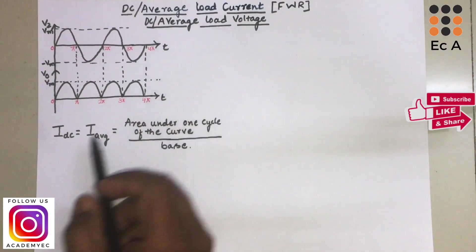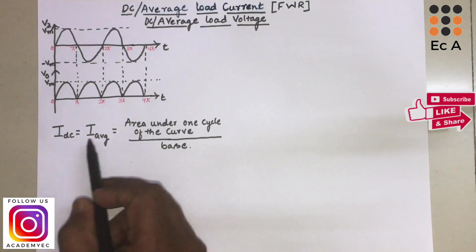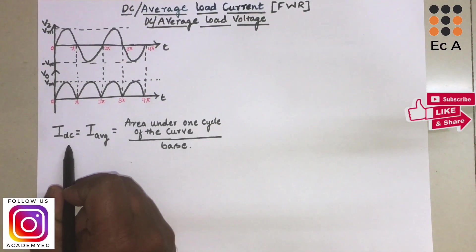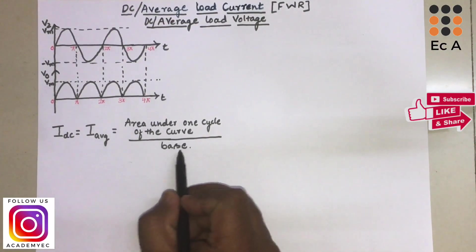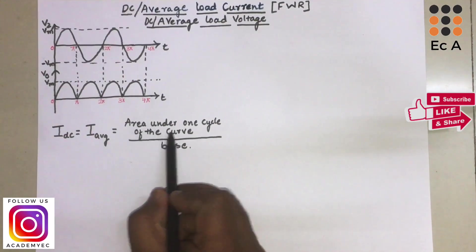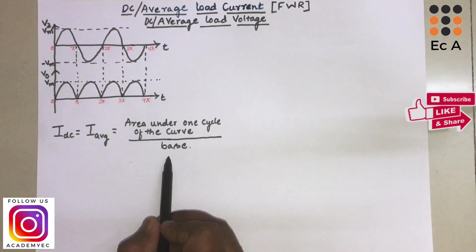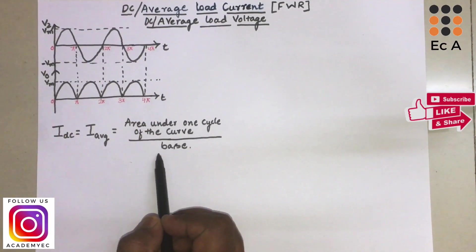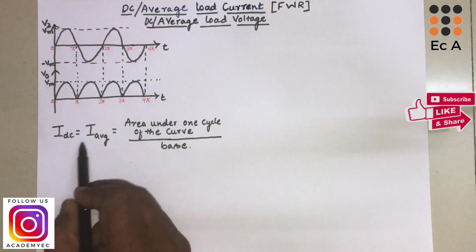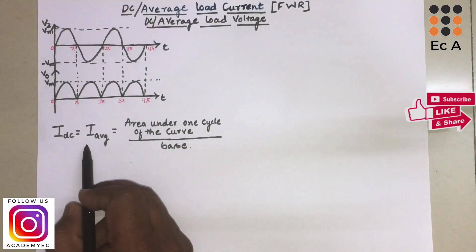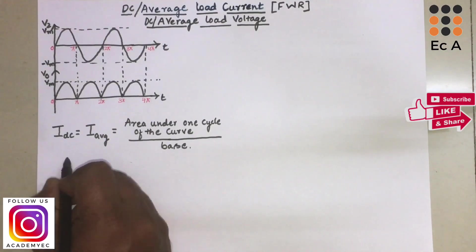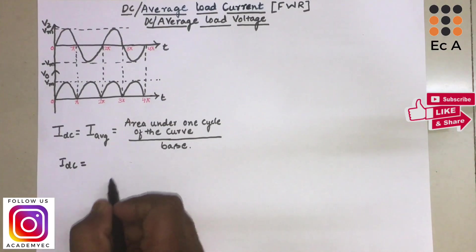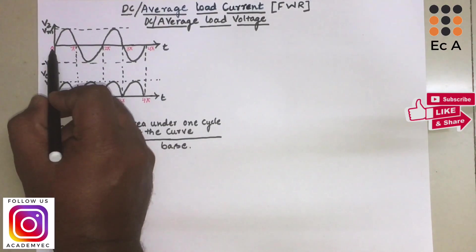First let us understand the DC current or average current of a full wave rectifier. The DC current or average current of a full wave rectifier can be given as area under one cycle of the curve divided by base. So area under one cycle of the curve divided by base is the average current or DC current of a rectifier.